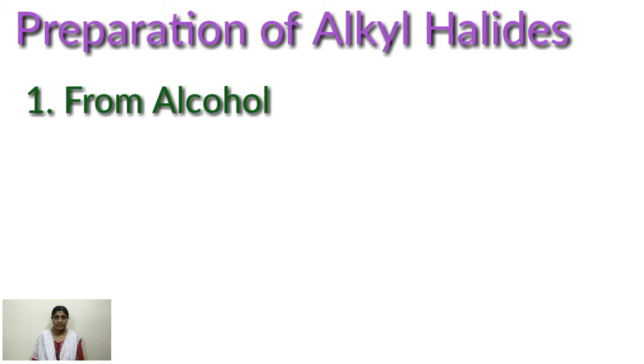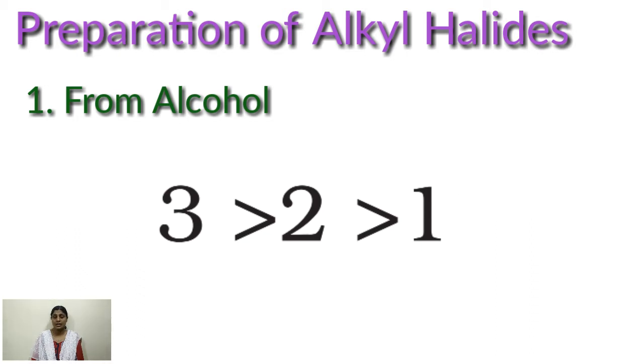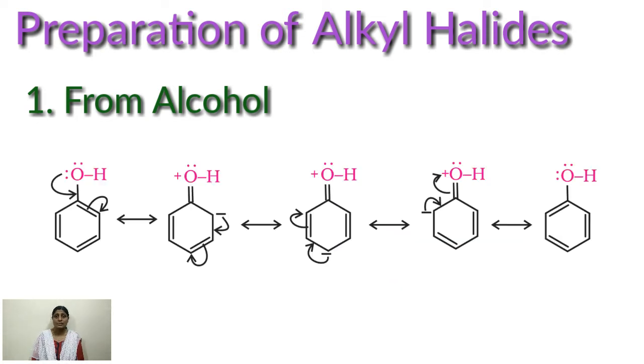Good yield of alkyl iodide RI may be obtained by heating alcohol with sodium or potassium iodide in 95% phosphoric acid. The order of reactivity of alcohols with hydrogen halide is tertiary greater than secondary greater than primary. These methods are not applicable for the preparation of aryl halides because the carbon-oxygen bond in phenol has a partial double bond nature, and so it is very difficult to break. You can see the resonating structure there.